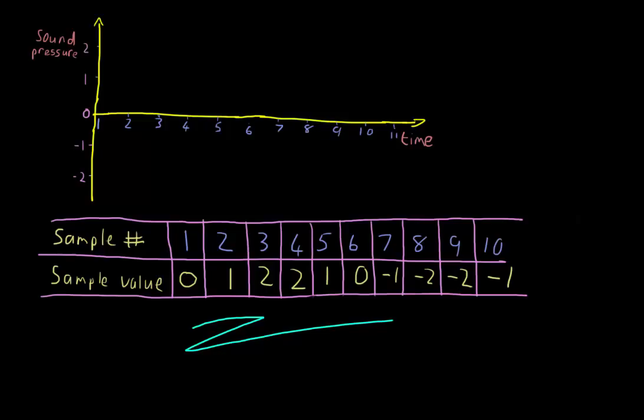We still need to know the sample rate, or the sample frequency, which is often denoted as F of S, or the sampling frequency. This is simply the amount of times that we sample per second.